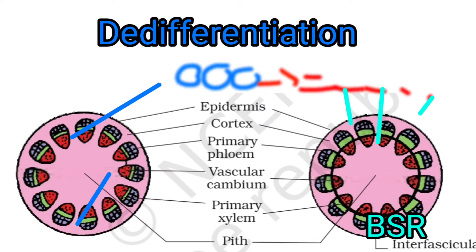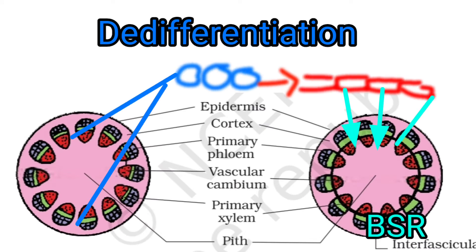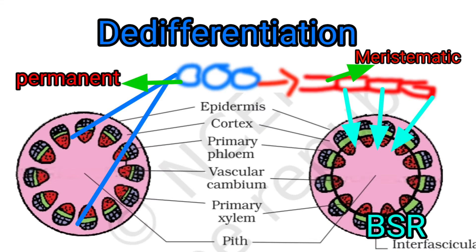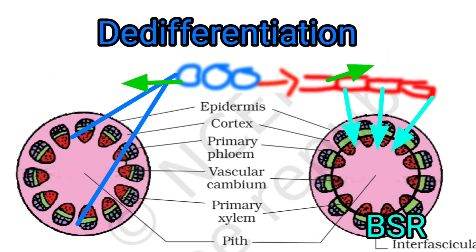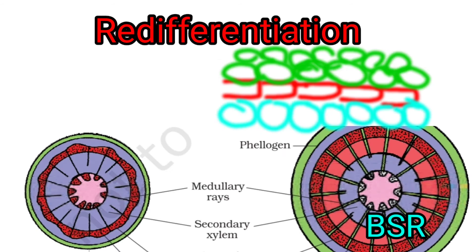Then de-differentiation. In between the vascular bundles, the permanent cells are present which convert into meristematic tissue. Example: vascular cambium.